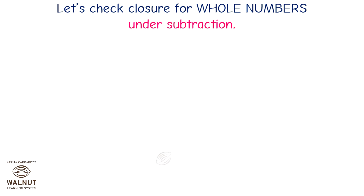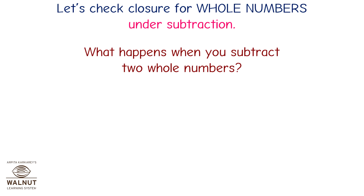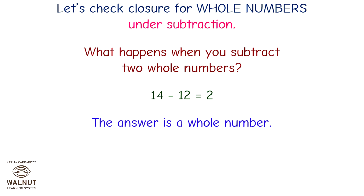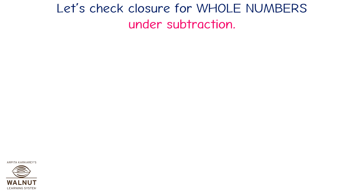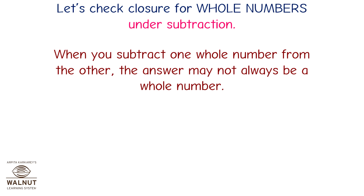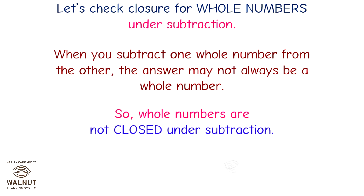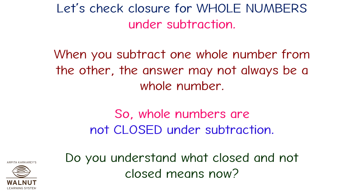Let's check closure for whole numbers under subtraction. 14 minus 12 is equal to 2 — a whole number. But 14 minus 18 is equal to minus 4, which is not a whole number. When you subtract one whole number from another, the answer may not always be a whole number. So whole numbers are not closed under subtraction.